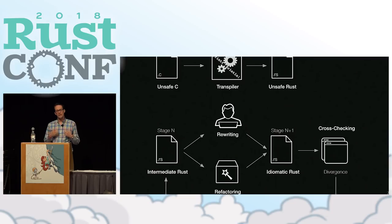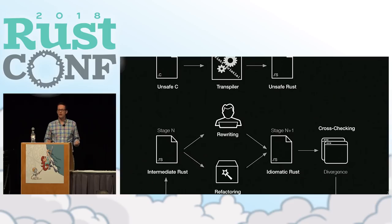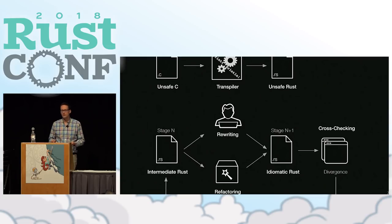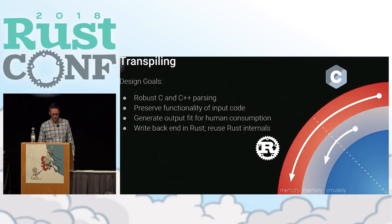We have a tacit assumption that you want to at some level preserve the functionality of what your C program is doing. So let's say you're migrating a decoder — you still want the decoded output from your Rust code to be the same as your C code. There are lots of opportunities to check the two versions or sanitize them against each other.